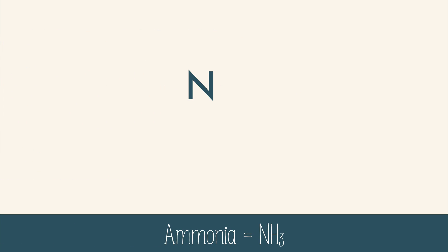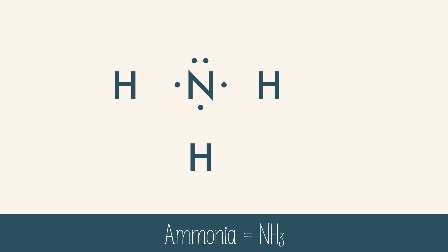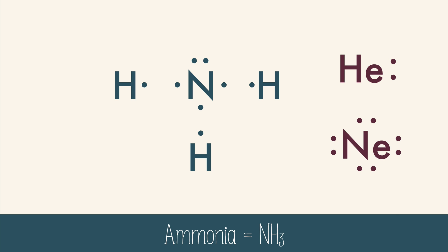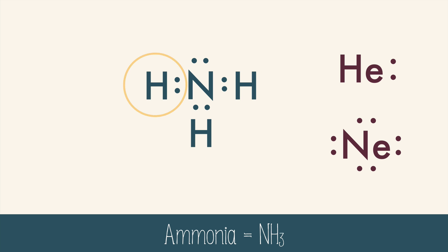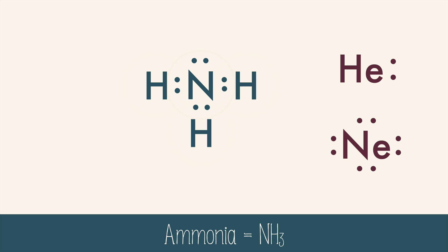Ammonia has the formula NH3. Nitrogen has five valence electrons and each hydrogen has one. Each of those hydrogens wants to have two electrons like helium, and nitrogen wants to have eight electrons like neon. When they bond, each hydrogen feels as though it has two electrons and the nitrogen feels as though it has eight, like neon. This is why it forms a stable compound.